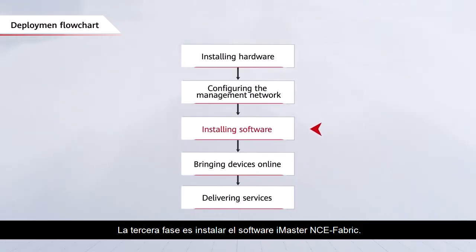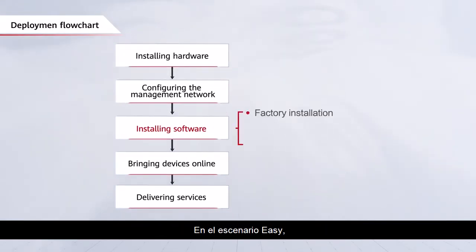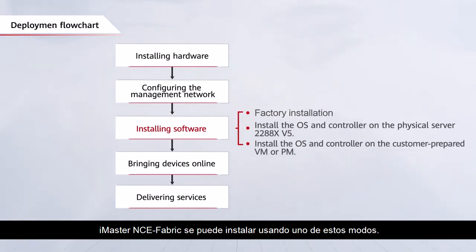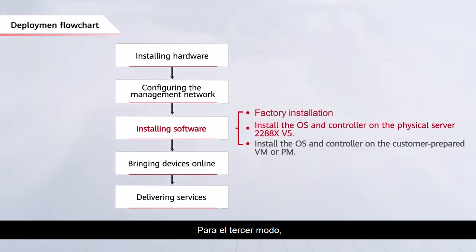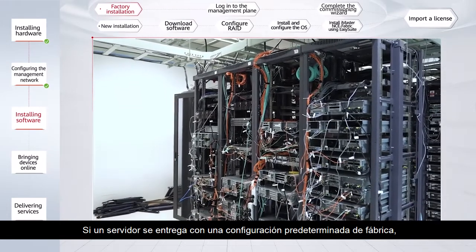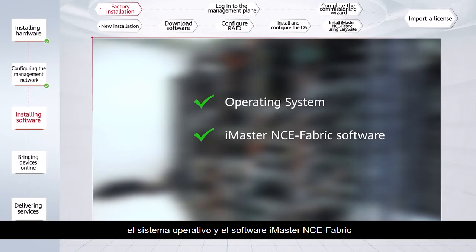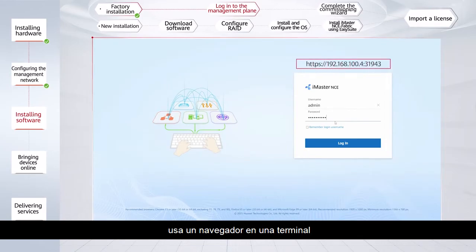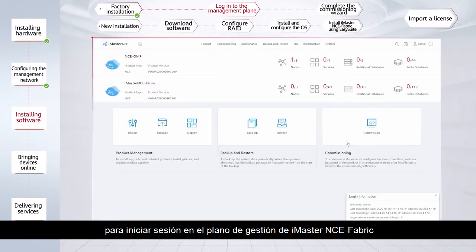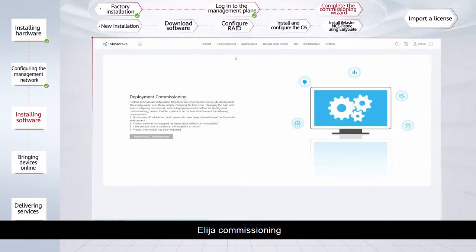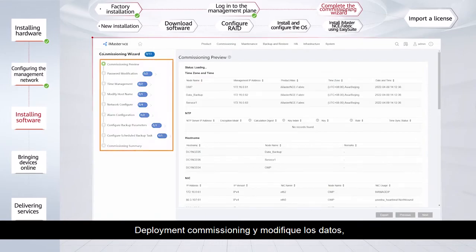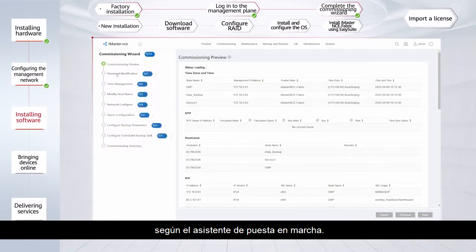The third phase is to install the iMaster NCE Fabric software. In the easy scenario, iMaster NCE Fabric can be installed using one of several modes. This video introduces the first two modes; for the third mode, refer to the product documentation. If a server is delivered with factory default settings, the OS and iMaster NCE Fabric software have been pre-installed. In this case, use a browser on a terminal to log into the iMaster NCE Fabric management plane through the default address, then choose Commissioning > Deployment Commissioning and modify data such as the host name and southbound and northbound network plane addresses according to the commissioning wizard.